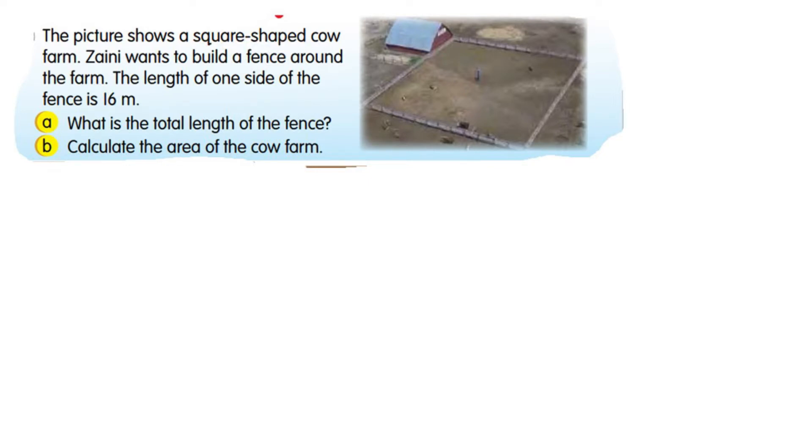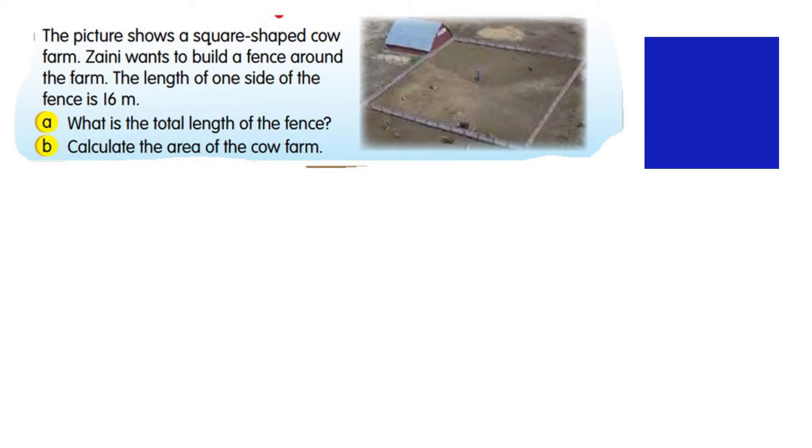Now draw a square and label the sides. To find the total length of the fence, we need to find the perimeter. The perimeter of the square is 16 meters plus 16 meters plus 16 meters plus 16 meters.